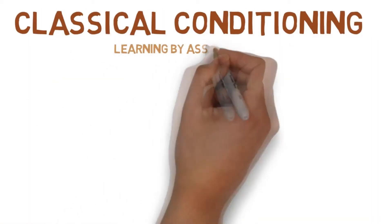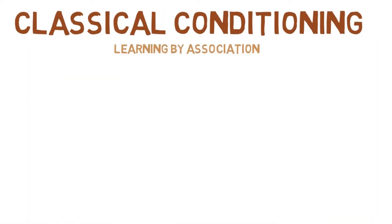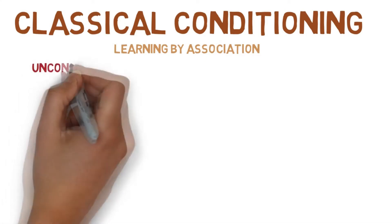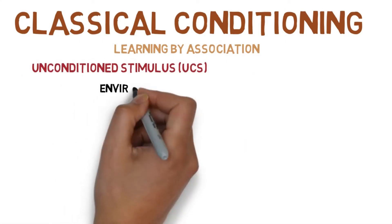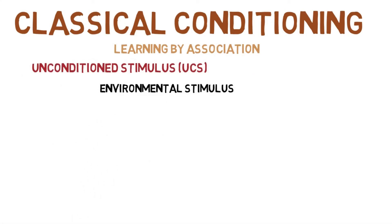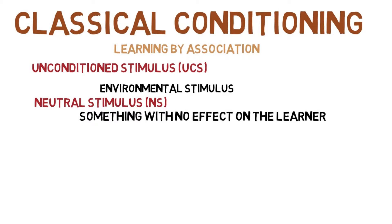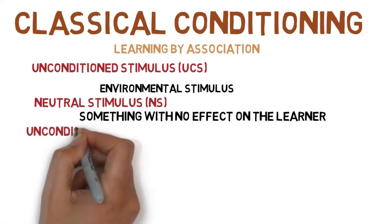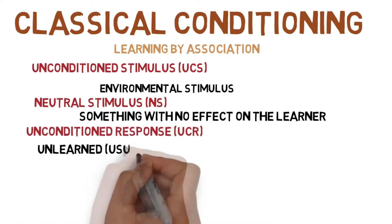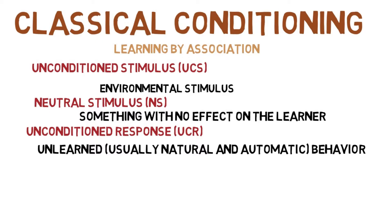To sum up so far: classical conditioning is a type of learning by association. There are several elements. First, you have the unconditioned stimulus, which is a stimulus that is usually in the environment. Next, you have the neutral stimulus, which is something that has no effect on the learner. Then you have the unconditioned response, which is a behavior that has not been learned or taught — usually a natural response or reflex, such as feeling sick.